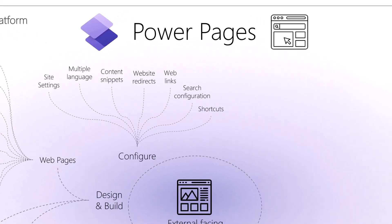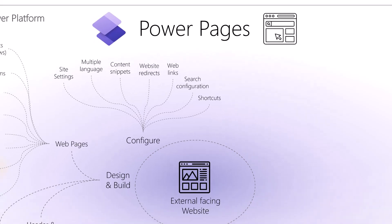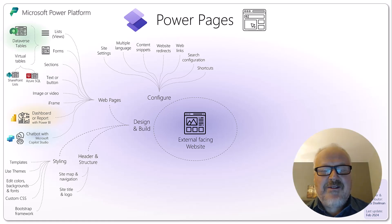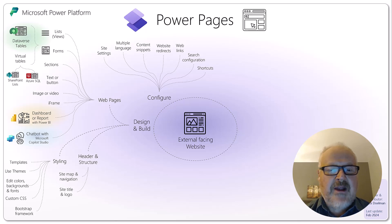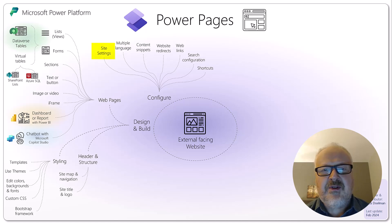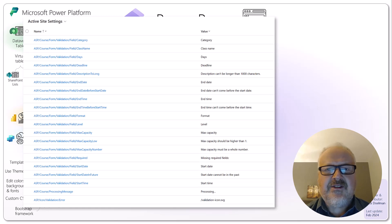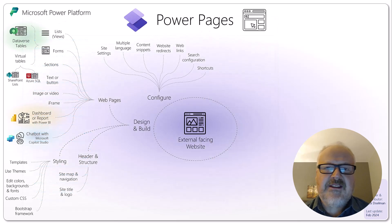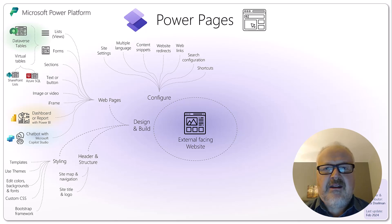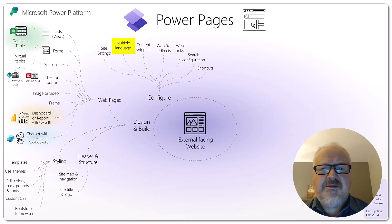On the configuration side, site settings work like registry settings — turning on or off specific features of your website. For example, when you configure authentication, site settings get updated and they control pretty much the whole website. There are also multilingual capabilities that tap into the multi-language support of Dataverse: you provision alternate languages in Dataverse, turn it on for your site, and users can flip to different languages.